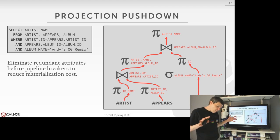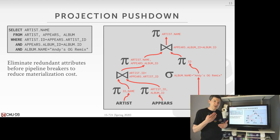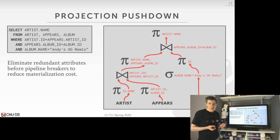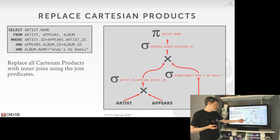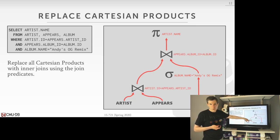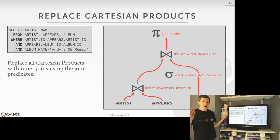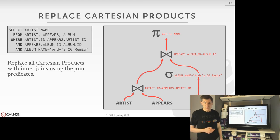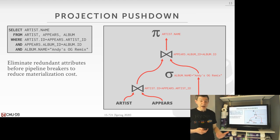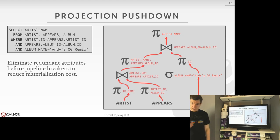These are all logical optimizations — I didn't look at a cost model. I just know I want to do certain things and bake the transformation rules into my optimizer. The most obvious one: if I have a Cartesian product and a filter with a join clause right above it, I can write a rule to combine them without consulting a cost model, because inner joins are always preferable to Cartesian products in my data system — you never want to execute Cartesian products unless explicitly told to do a cross join.